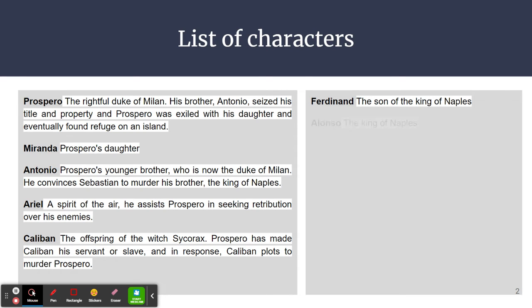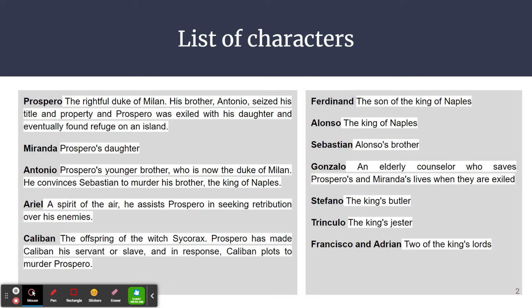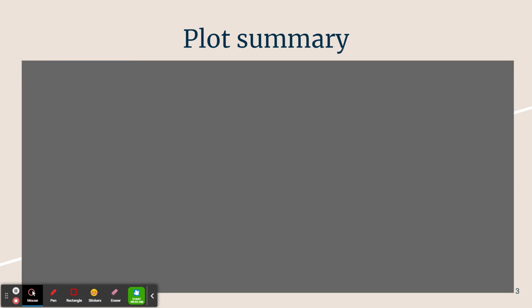Ferdinand is the son of the king of Naples. Alonso is the king of Naples. Sebastian is Alonso's brother. Gonzalo is an elderly counsellor who saves Prospero's and Miranda's lives when they are exiled. Stefano is the king's butler. Trinculo is the king's jester. Francisco and Adrian are two of the king's lords. And finally, the Boatswain is the ship's petty officer.